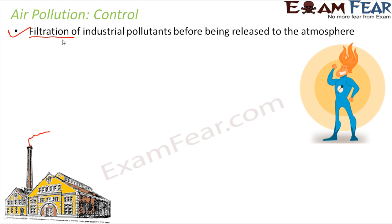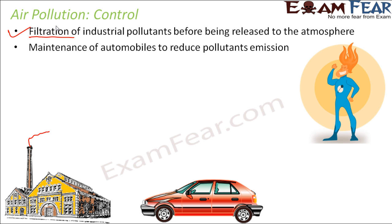For this filtration, we have specific devices. One of them is the electrostatic precipitator, which helps filter industrial pollutants so that the gases released are far less polluting.